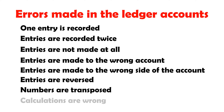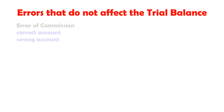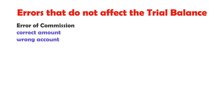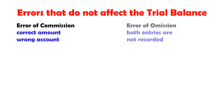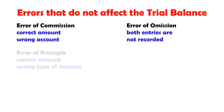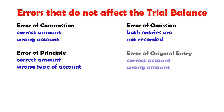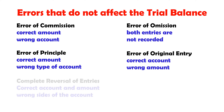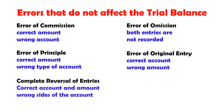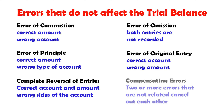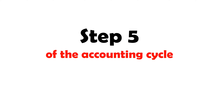Errors that affect the trial balance involve a suspense account when calculations are wrong. Errors that do not affect the trial balance include two or more unrelated errors that cancel each other out.